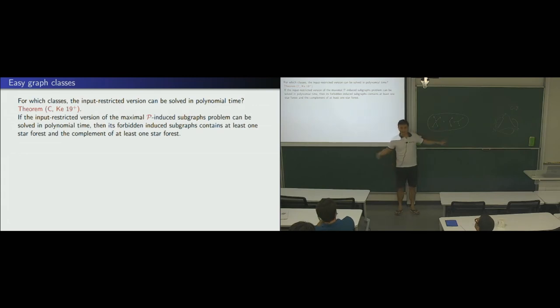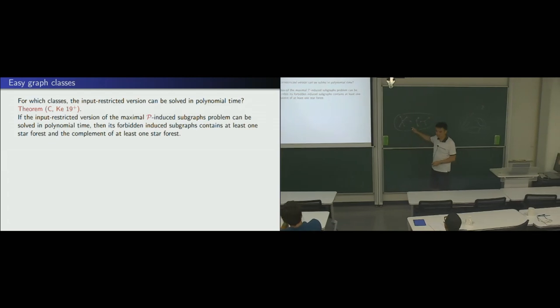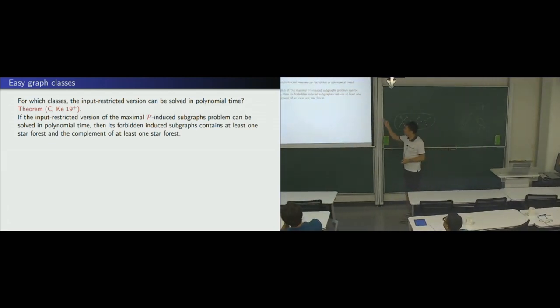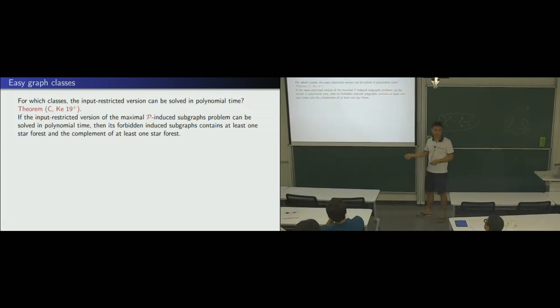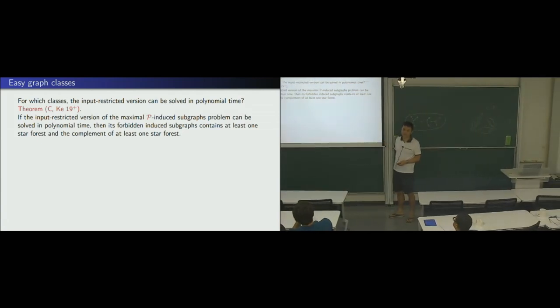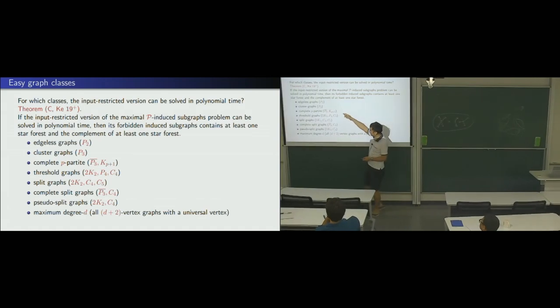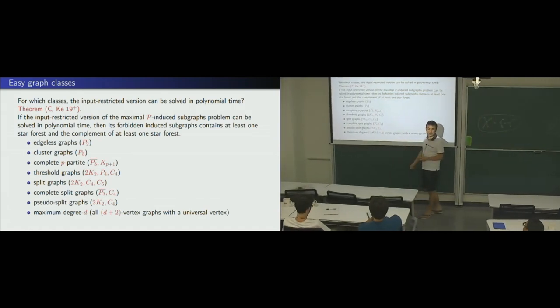So, if a graph class has that property, then, the forbidden graph must contain something. This is called a star forest. Star forest means every, this is a forest, and every tree is a star. Okay? So, that forbidden graph contains a star forest, and a complement of a star forest. This is a necessary condition. We are not able to show it's sufficient, but we can check it's sufficient. So, and after that, we show this, and, quite a lot of graph classes have that property.